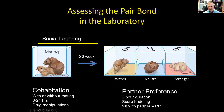In the partner preference test, we tether the partner on one side and a novel animal on the other side, then watch for three hours to see who the subject spends time with. If animals have pair bonded, they'll spend more than twice as much time with the partner than the stranger. This test can be run on large numbers of animals with computer software that quantifies behavior immediately, and now we're also using DeepLabCut.